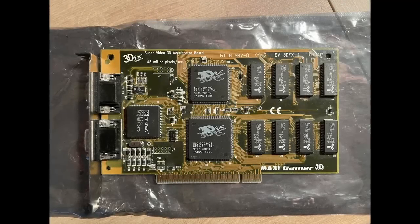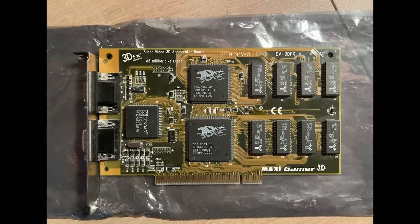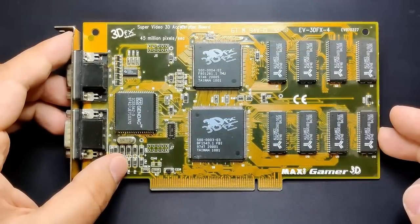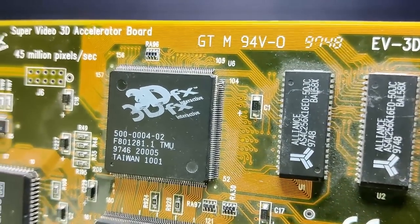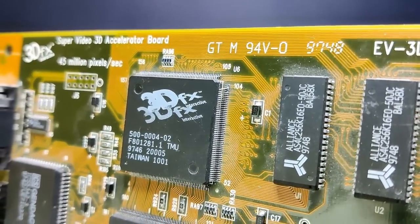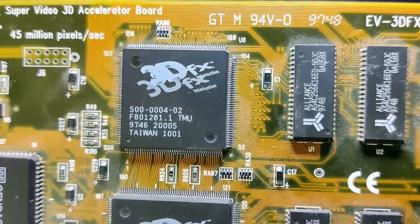I found this Voodoo card on eBay and immediately noticed that the TMU chip had an issue. Of course, that didn't stop me from bidding and winning the card for about 50 USD including shipping. Ouch! That's a bit steep for a broken Voodoo card, isn't it?